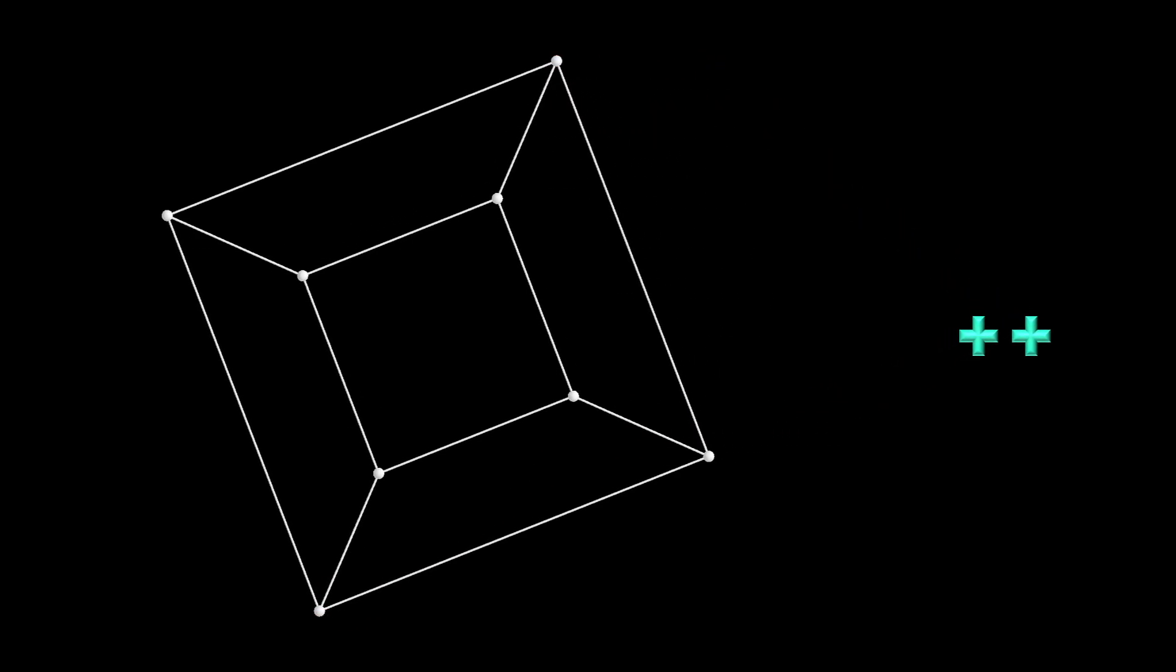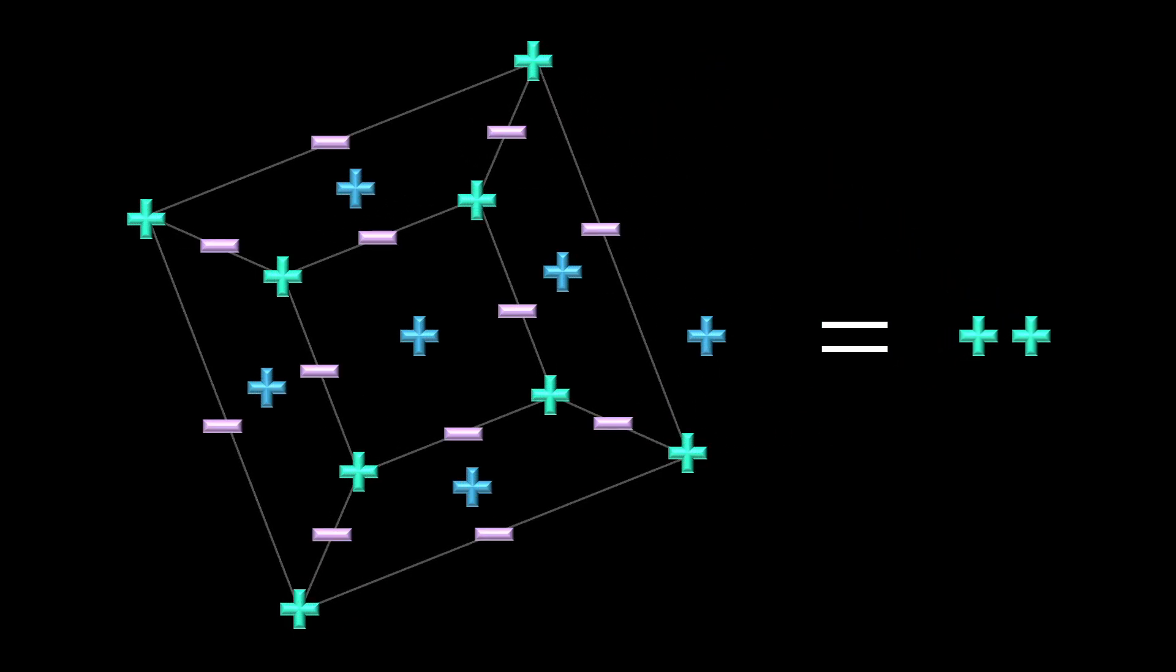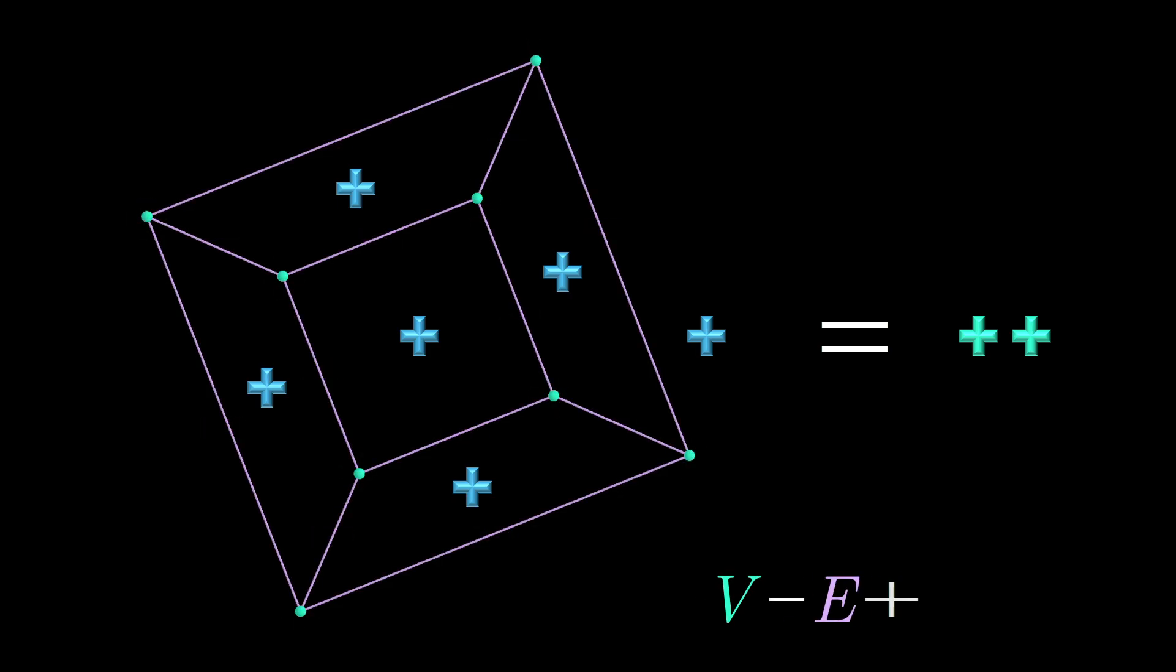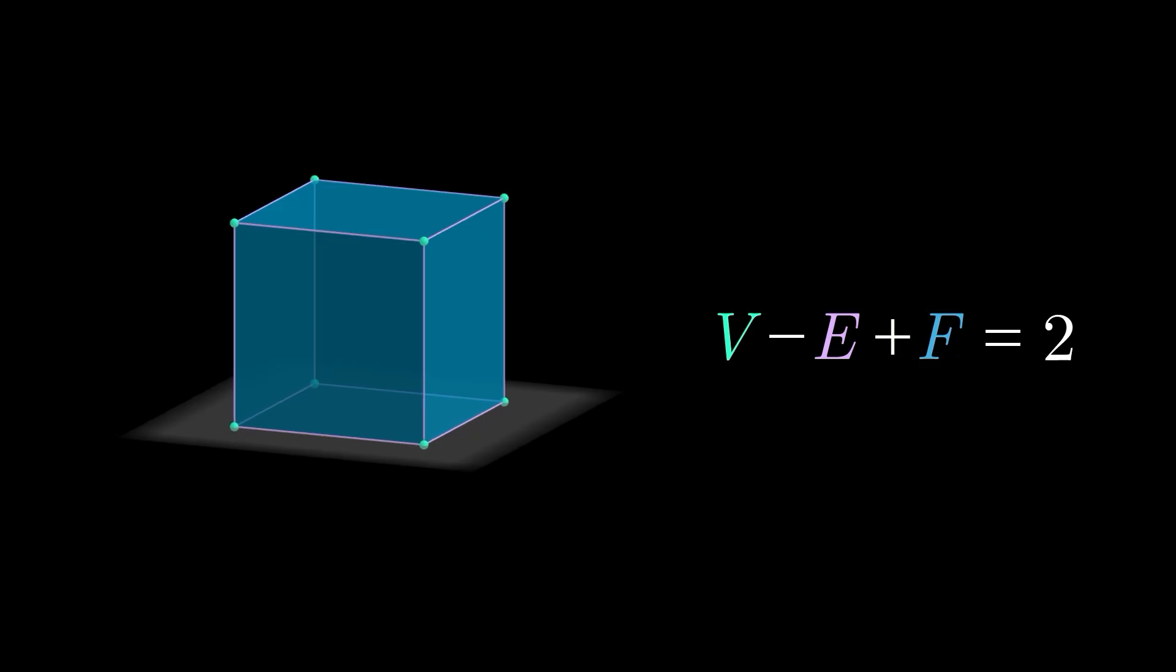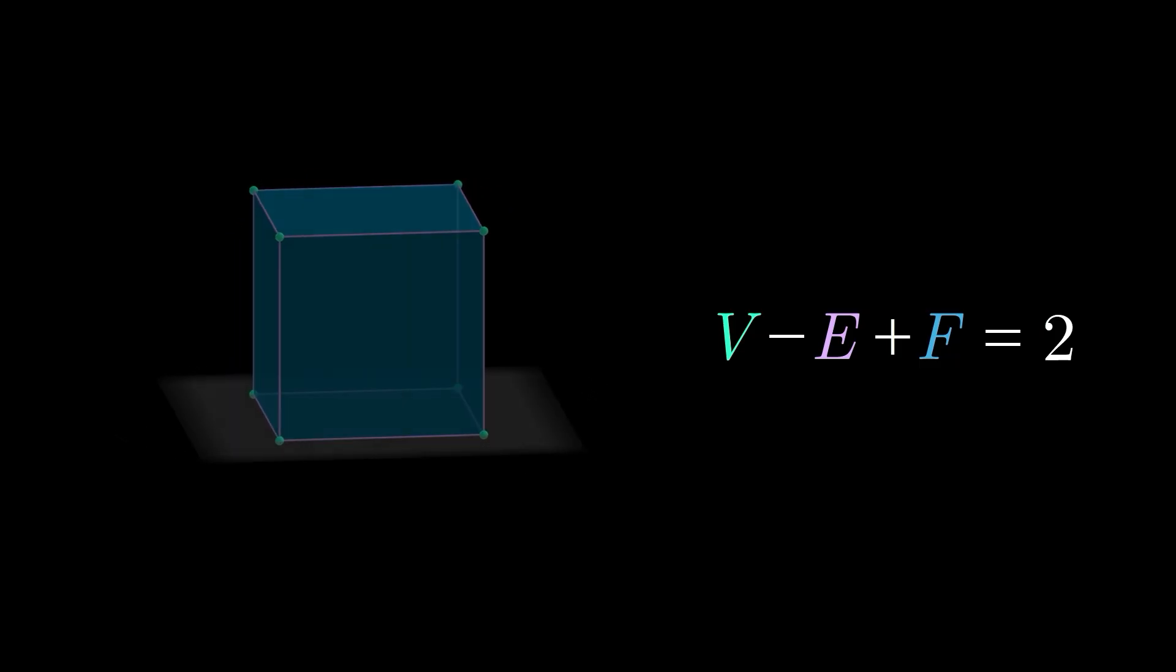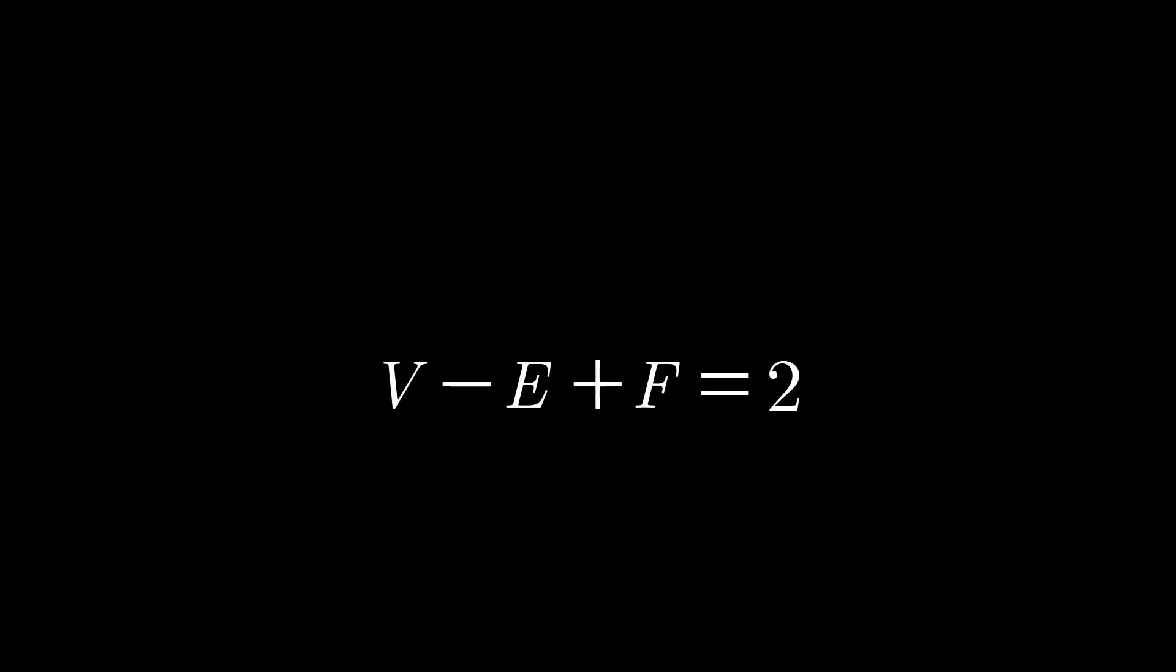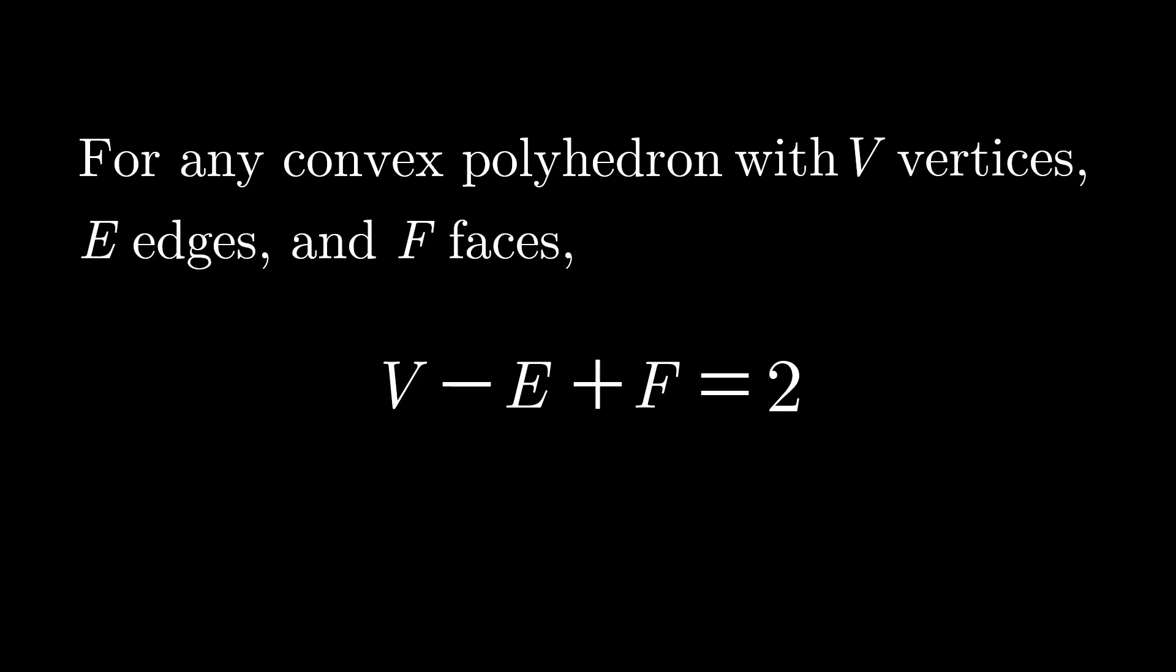Therefore, combining all the charges in the diagram gives a total charge of positive 2, which means that the number of vertices minus the number of edges plus the number of faces for our planar graph and thus also for our original cube is 2. Lastly, we can imagine applying this method of discharging to any other convex polyhedron, showing that Euler's polyhedron formula V - E + F = 2 holds for any such figure with V vertices, E edges, and F faces.